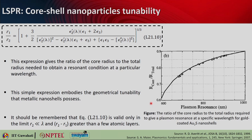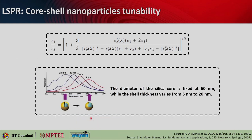To avoid confusion: gold-coated Au2S nanoshells means the core is Au2S (gold sulfide, a dielectric) coated with gold. This formula applies specifically for dielectric-core metallic-shell nanoparticles, where epsilon_1 is the dielectric core and epsilon_2 (with real and imaginary parts) is the metallic shell. Thicker gold shells push the resonance back toward 520 nm.